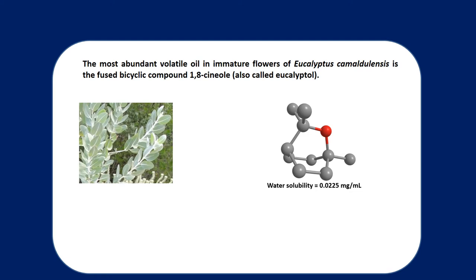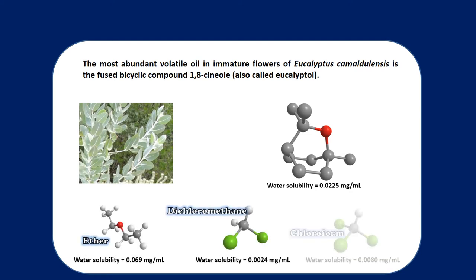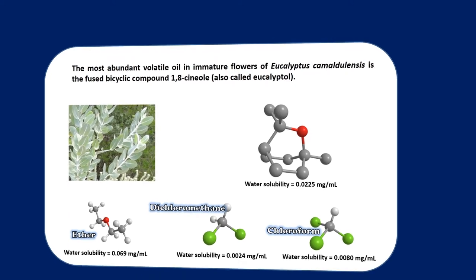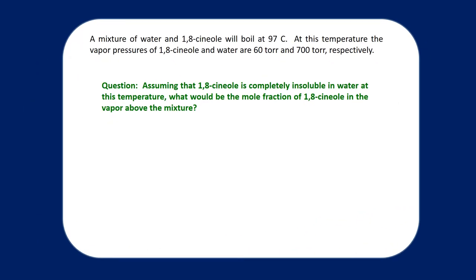Even this very marginal solubility can generally be neglected, as evidenced by many of the solvents we use in the organic chemistry lab. We often think of ether, dichloromethane, and chloroform as being completely immiscible with water, when the truth is they do have a very small solubility — but it's so small that it's essentially negligible. We're going to treat our eucalyptol in the same way. So let's do a little bit of math and see if we can prove to ourselves that we can isolate eucalyptol using a steam distillation — that is, deliberately distill away a mixture of water and cineol from the insoluble plant material.